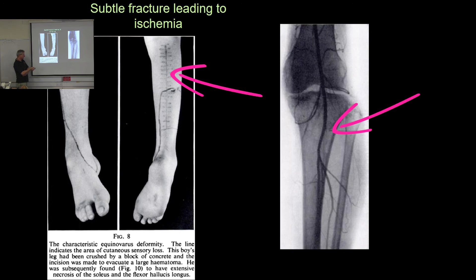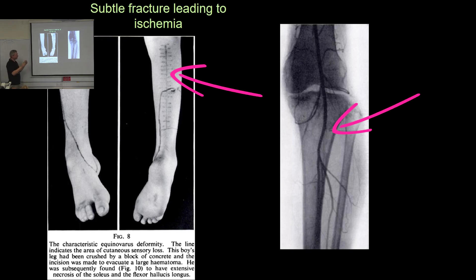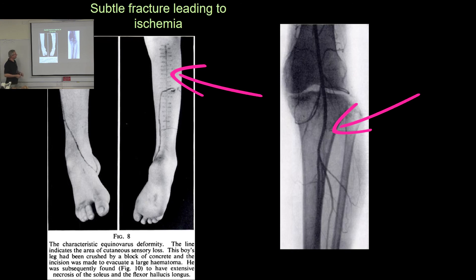In casualty, surgeons cut down the posterior leg to evacuate the large haematoma, but it was too late — the pressure had killed the nerve. The patient subsequently had extensive necrosis of the soleus and flexor hallux longus muscles and developed permanent foot drop. In another case, a driving instructor was involved in a low-speed rear-end collision at a roundabout — less than 20 miles per hour — and came to casualty the next day feeling unwell and nauseous.